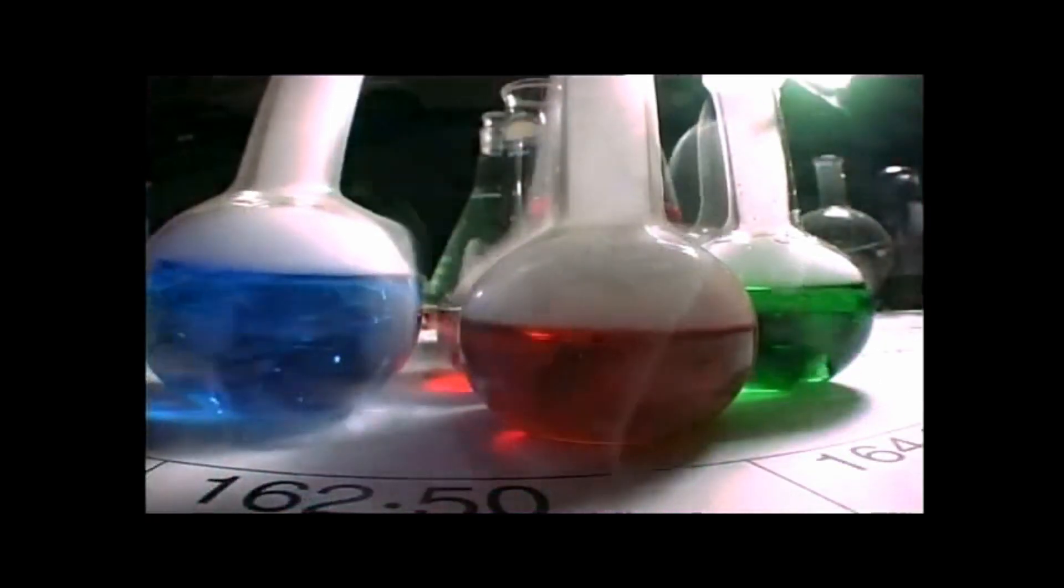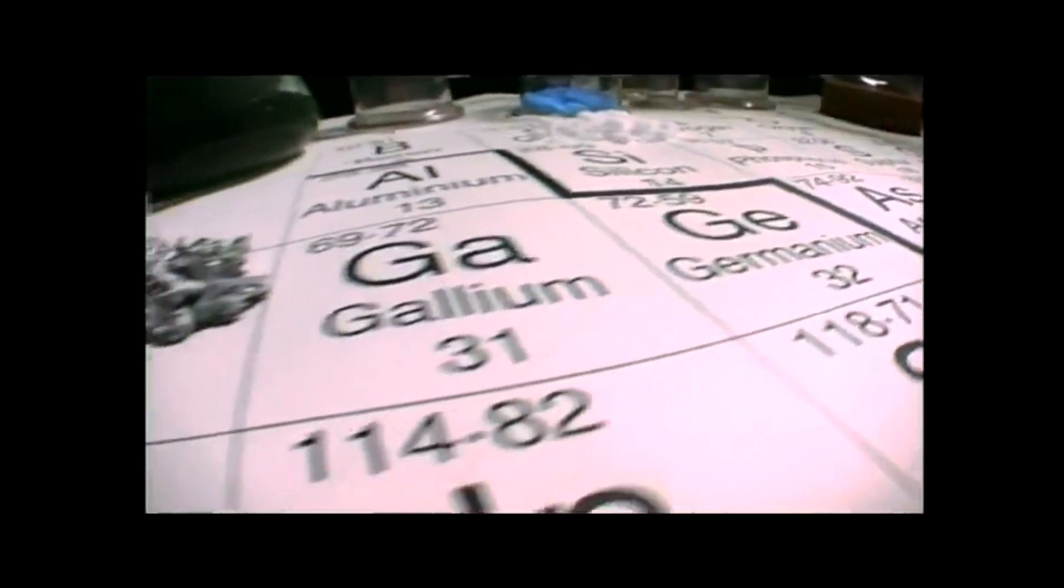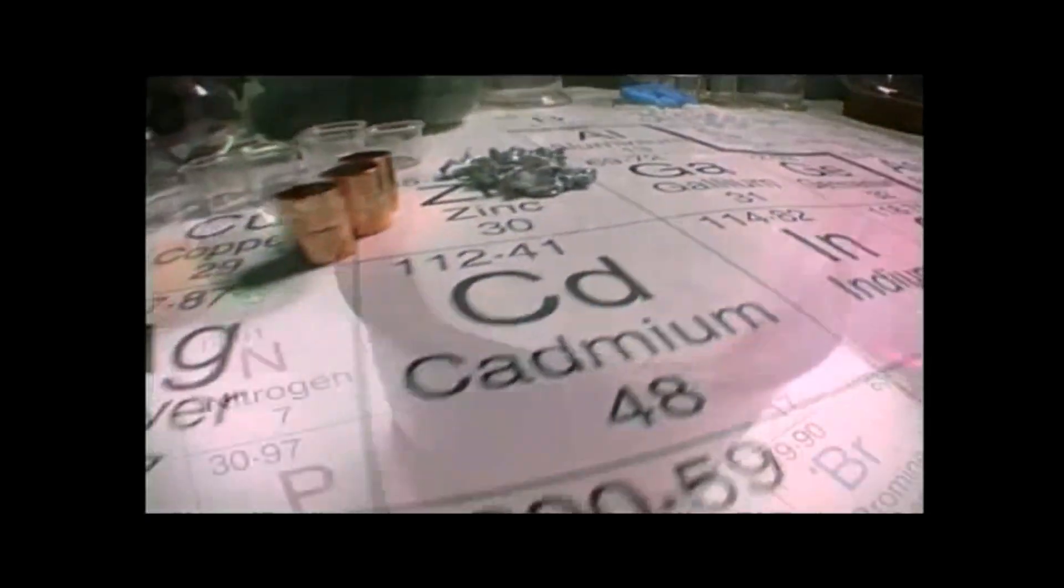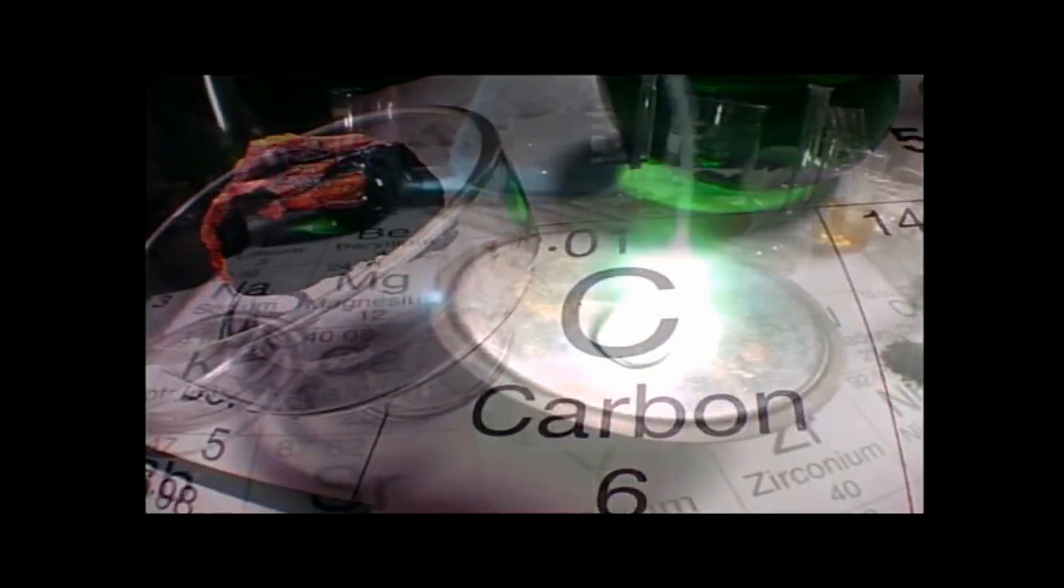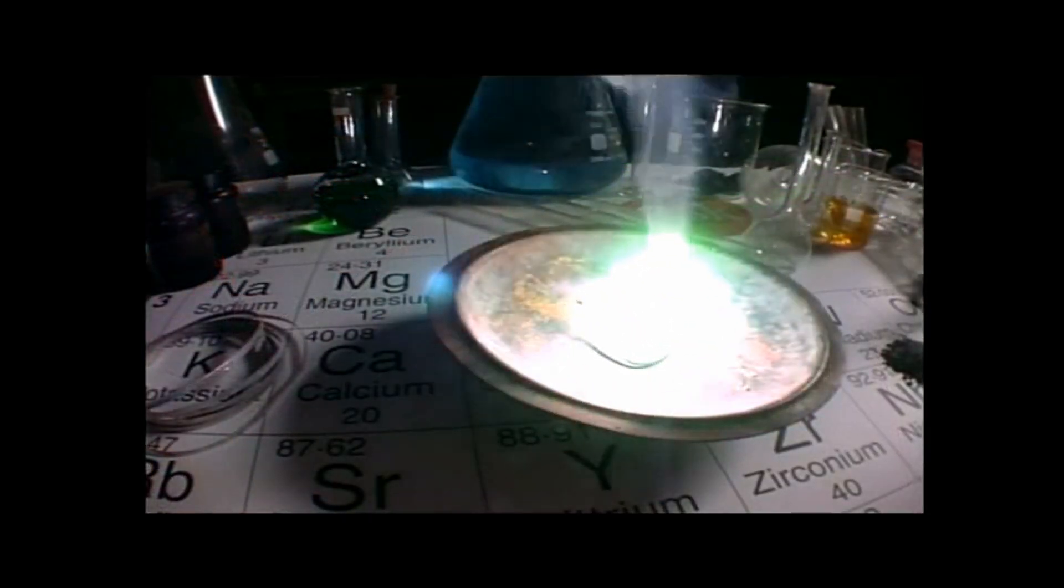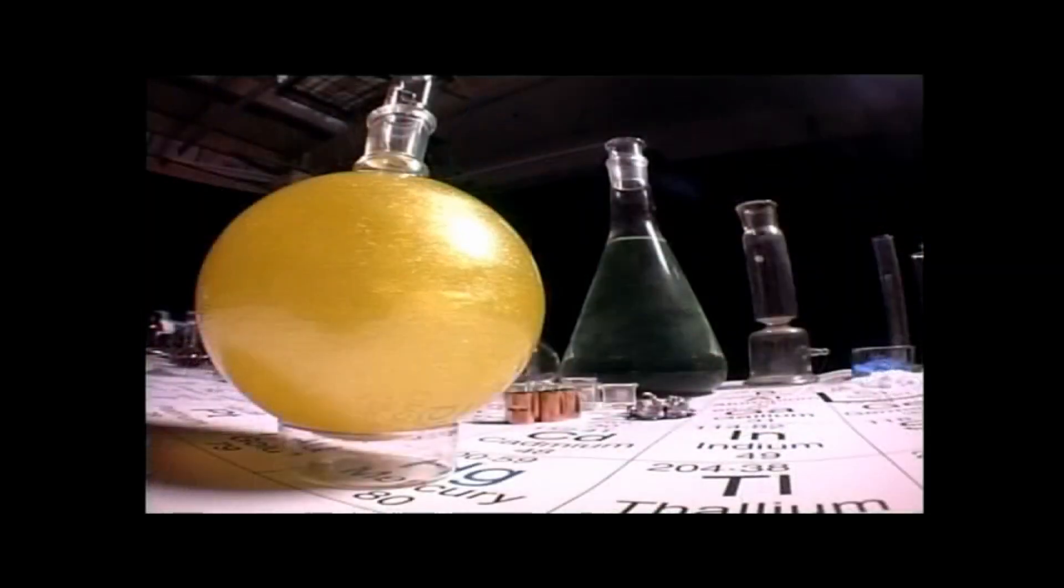But each of the elements behaved in a different way. Did that mean that there were 80 different kinds of atom? And if so, what made them different? Were they different shapes or sizes? Or maybe the atoms were divisible. Maybe they were built of even smaller objects.